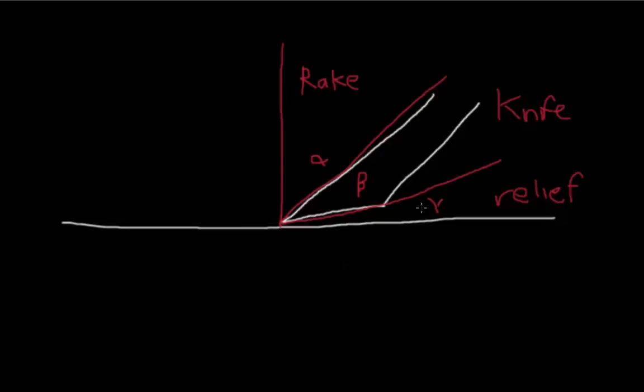As this angle gets larger, this beta here is going to get smaller, so it's going to become a lot thinner for the tool itself. If it's a lot thinner it might be easier to snap. The knife angle itself is going to affect the rate of the wear in two different ways.